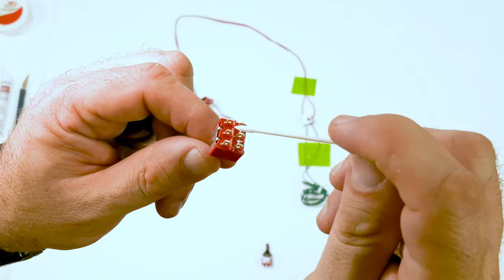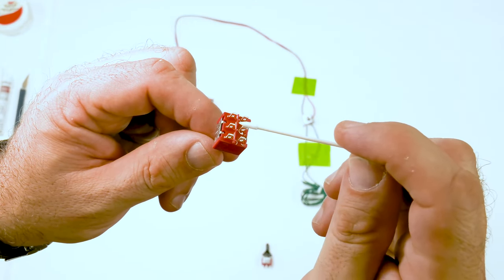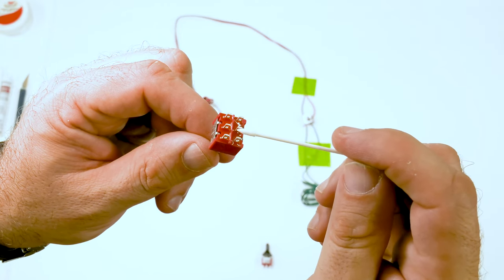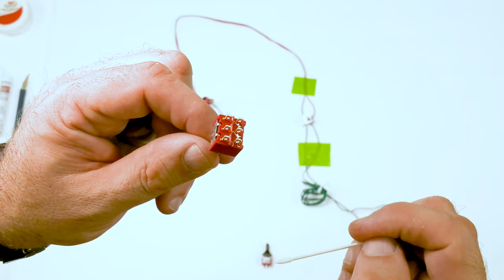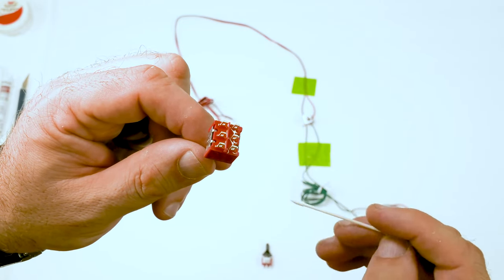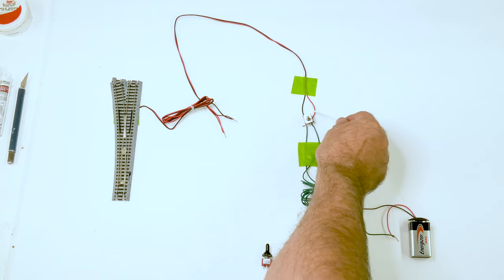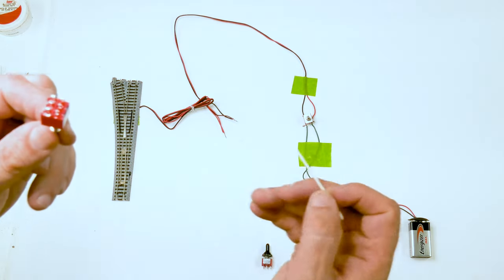The middle two posts, one's going to get red, the other one's going to get black. That goes directly to your switch. The middle two go to your switch. So from your switch, red and black to the toggle.